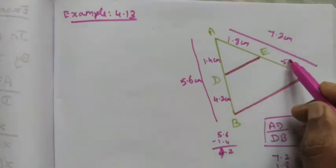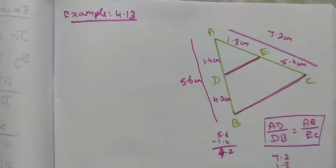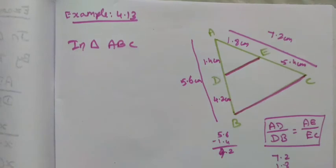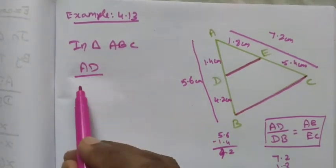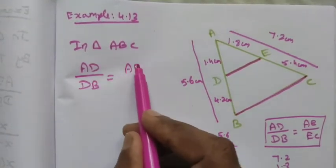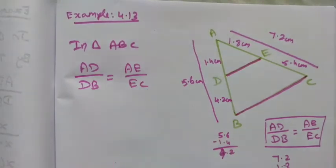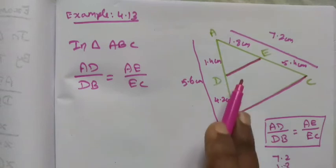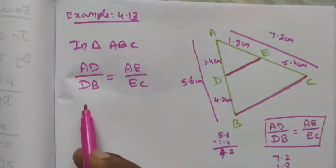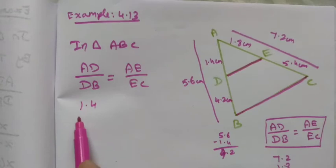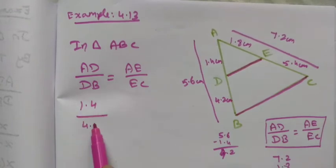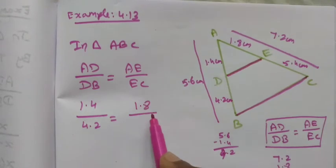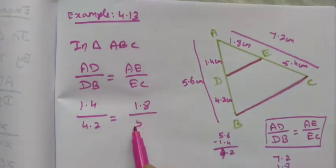EC is 5.4 centimetres. Now we check in triangle ABC whether AD divided by DB equals AE divided by EC. If LHS equals RHS, we can say DE is parallel to BC. So AD equals 1.4, DB equals 4.2, AE equals 1.8, and EC equals 5.4.